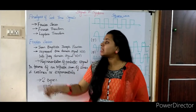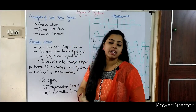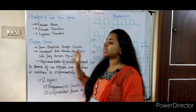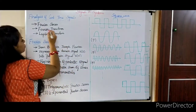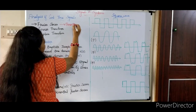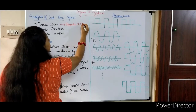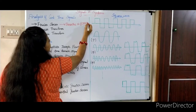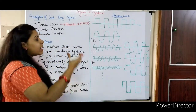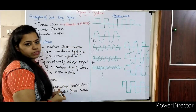Based on our signal, we can choose any one of these tools. In the Fourier series, we can apply it to a periodic signal for both continuous and discrete. For a continuous periodic signal, we can use Fourier series. For a discrete periodic signal, we can also use Fourier series.